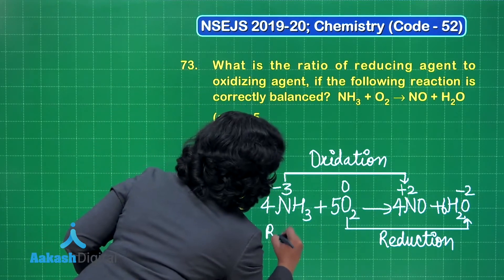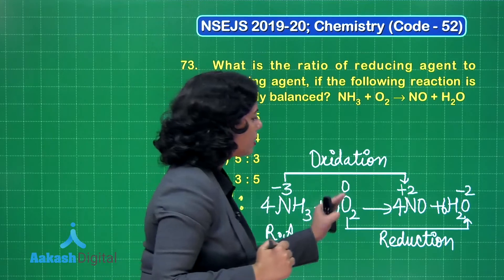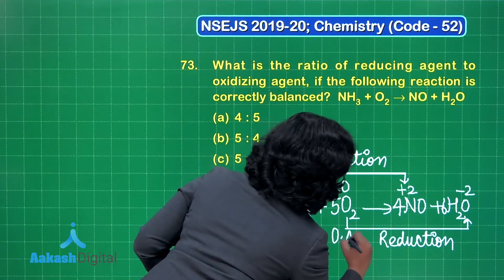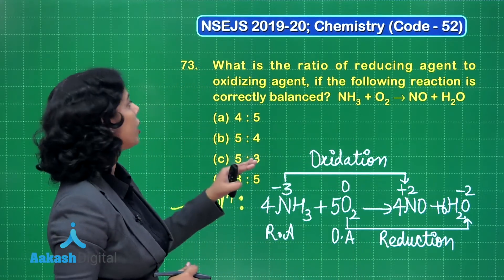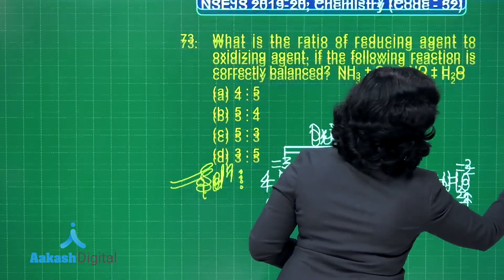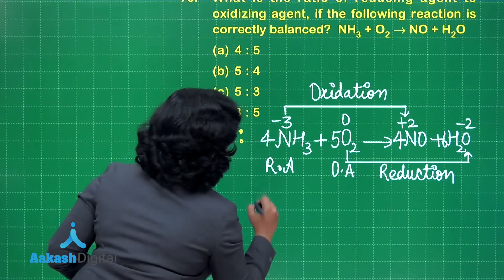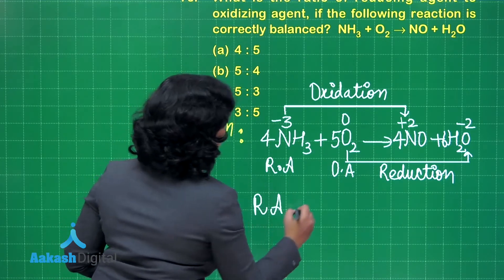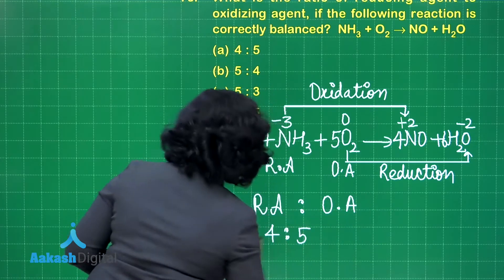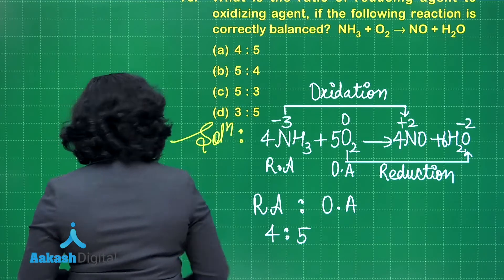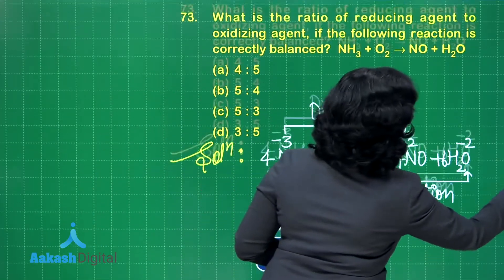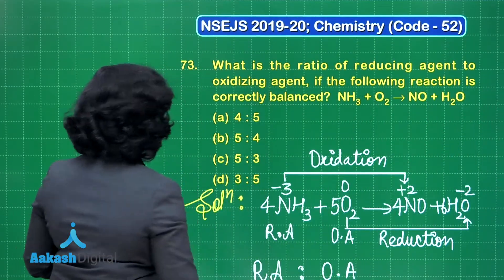Ammonia is getting oxidized, so it is the reducing agent. Oxygen is getting reduced, so oxygen is the oxidizing agent. The ratio of reducing agent to oxidizing agent in terms of moles is 4:5. This is the correct answer, option A.